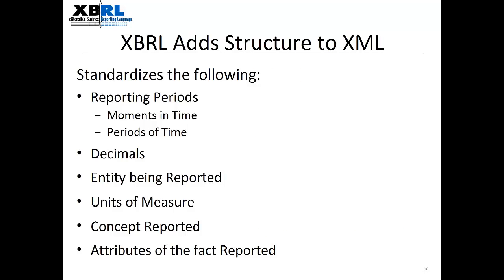XBRL takes XML and adds structure that helps standardize features of data common to financial data reporting, like the reporting period, the decimals in terms of accuracy of the numbers reported, who is the entity that reported the data, what unit of measure the data is being reported in — for example, US dollars or Great British Pounds — what the fact actually being reported is, and if there are additional attributes to that fact, what they are.